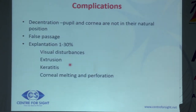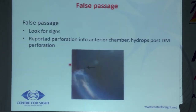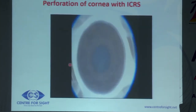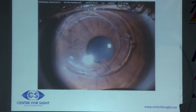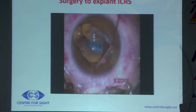You must ensure the segment is inserted correctly without creating a false passage. In one case, there was a corneal perforation — the intacs instead of being intrastromal ended up in the anterior chamber. However, the cornea is very forgiving, and it can be retrieved by simply going into the AC and removing the intacs segment.